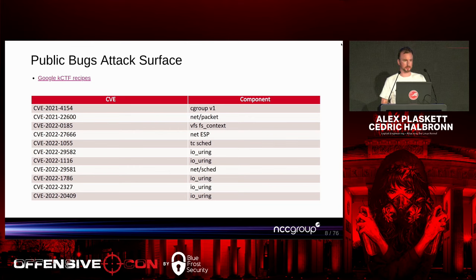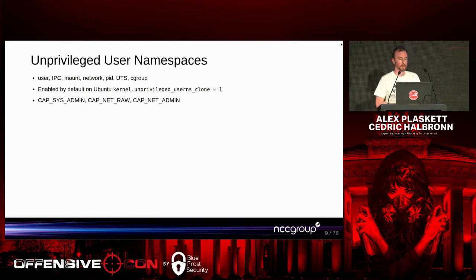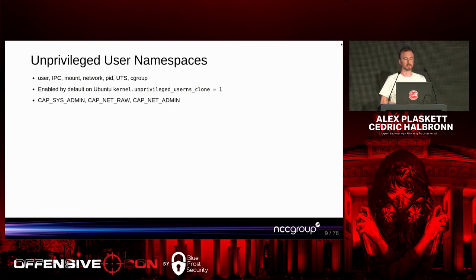Google came up with these exploit development recipes — essentially the bug classes, the primitives needed for developing exploits, and the capabilities required to exploit these bugs. One area we were very interested in was user namespaces. In Linux, user namespaces provide segregation and grouping of resources, and they are the kernel primitives on which containerization is built — things like IPC namespaces, mount namespaces, and network namespaces.